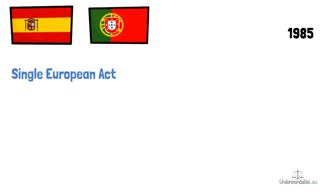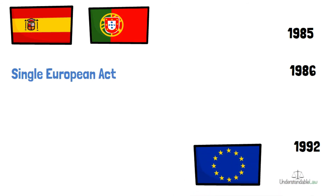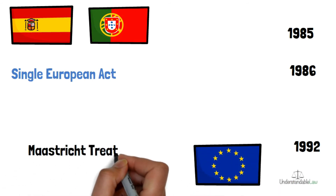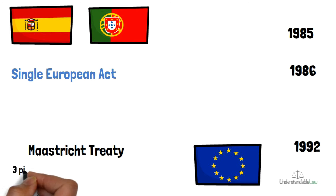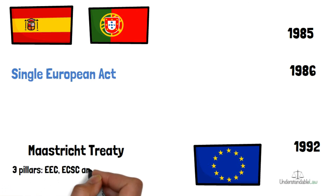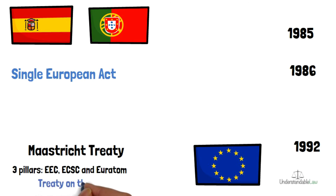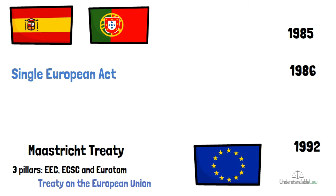In 1992, the community was named the European Union by the Maastricht Treaty. The European Union was founded on the basis of three pillars: EEC, ECSC and Euratom. The Treaty on the European Union was part of this Maastricht Treaty, and it contains the values and goals of the European Union. This European Union was more politically oriented than the community had been.